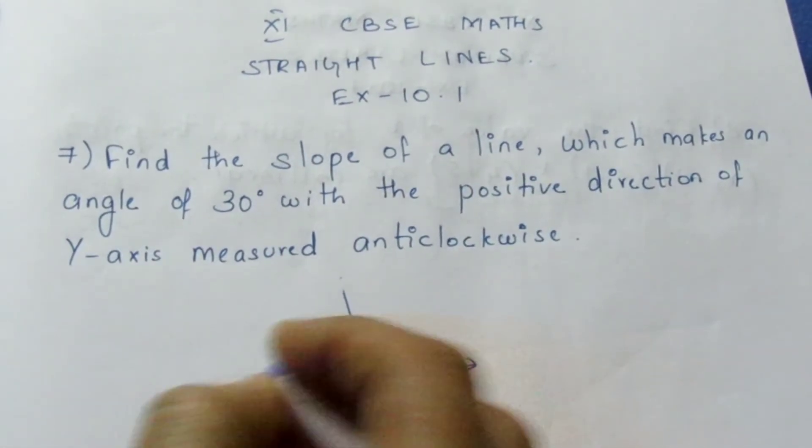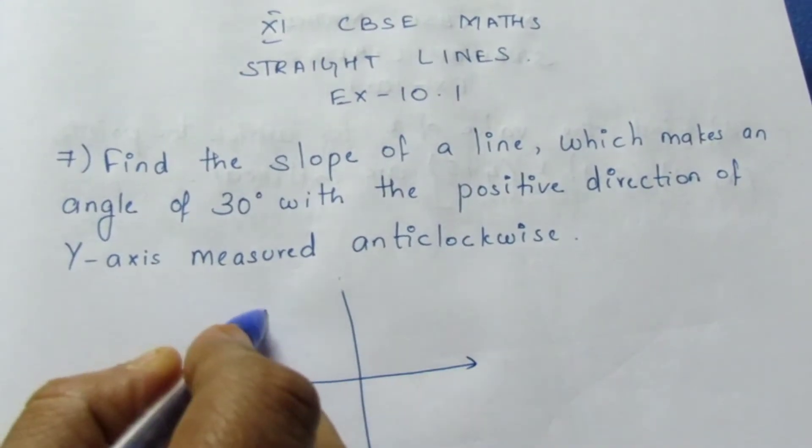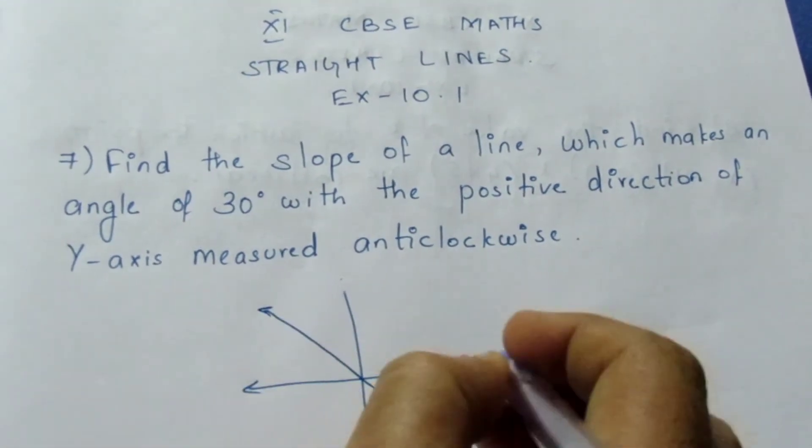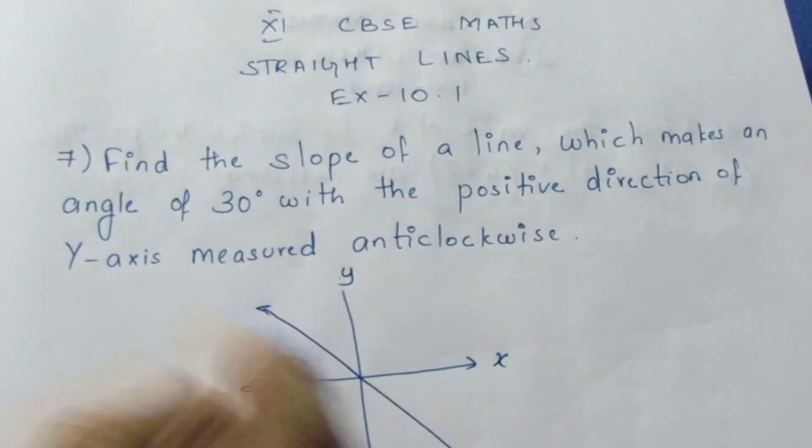They have given one straight line. Let me draw a straight line passing through the origin. So if this is my straight line, you know this is x-axis, this is y-axis, this will be my straight line.